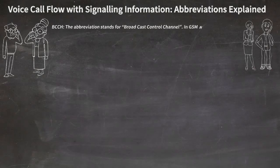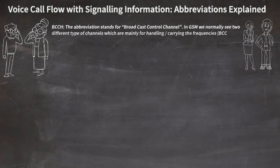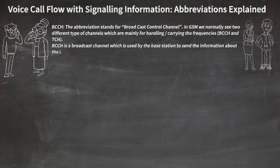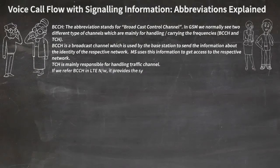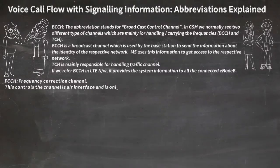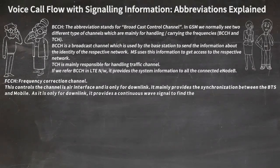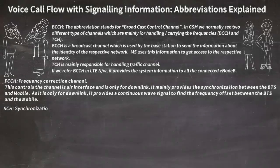BCCH stands for Broadcast Control Channel. In GSM we normally see two different types of channels mainly for handling or carrying frequencies: BCCH and TCH. BCCH is a broadcast channel used by the base station to send information about the identity of the respective network. The MS uses this information to get access to the network. TCH is mainly responsible for handling the traffic channel. In LTE, BCCH provides system information to all connected eNodeBs. FCCH is the Frequency Correction Channel — it controls the channel in the air interface and is only for downlink, providing synchronization between the BTS and the mobile by giving a continuous wave signal to find the frequency offset.